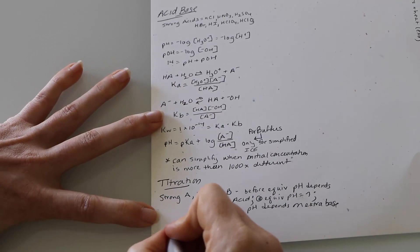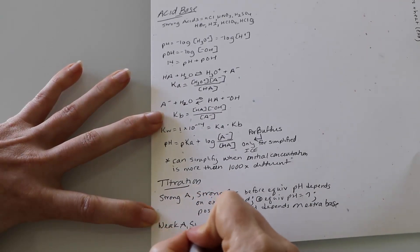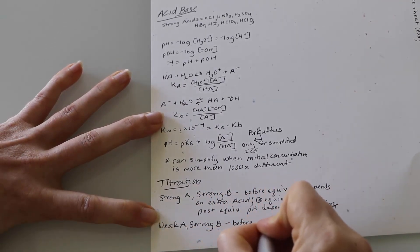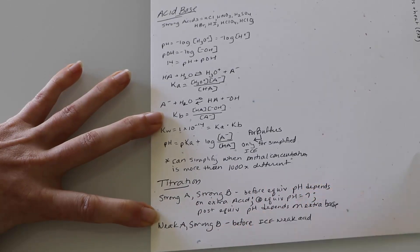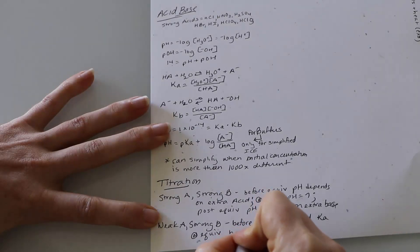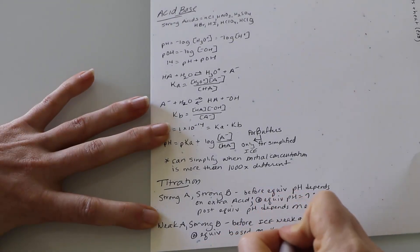And then I go down and I write just a couple of reminders. So when you're titrating a strong acid in a strong base, before the equivalence point, the pH is going to be dependent on the extra acid. At the equivalence point, it's going to be equal to seven. That's strong acid, strong base. That's just what it is. And then after the equivalence point, the pH is dependent on the extra base.